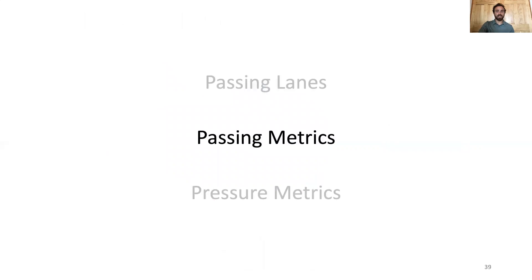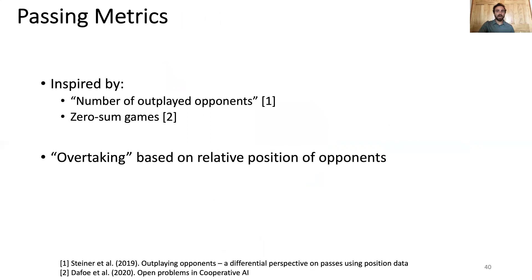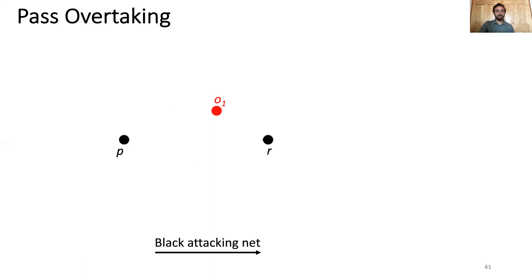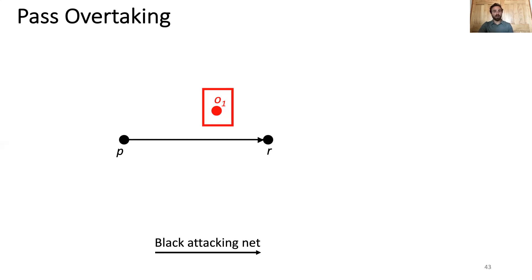Next, we present our passing metrics and the algorithms behind how we derive them. Our passing metrics are inspired by the number of outplayed opponents in European football and zero-sum games. Most of our passing metrics rely on the notion of overtaking opponents with passes based on their relative positions. Relative to the direction of Black's attacking net, if a pass is made, opponent one transitions from a good defensive position — where they were closer to their net than the puck possessor P — to a poor defensive position, because they're now further away from their net than the puck possessor R. This means opponent one was overtaken by this pass.